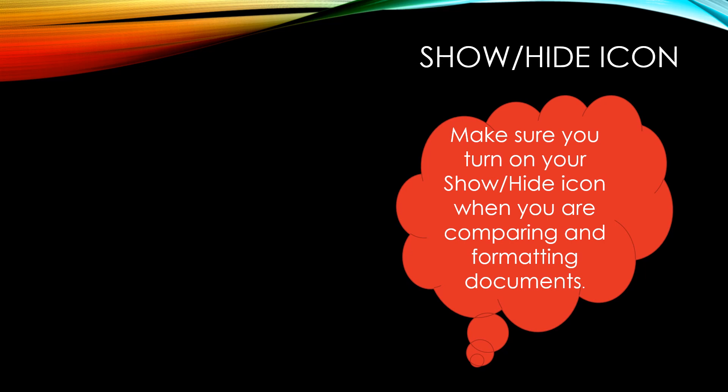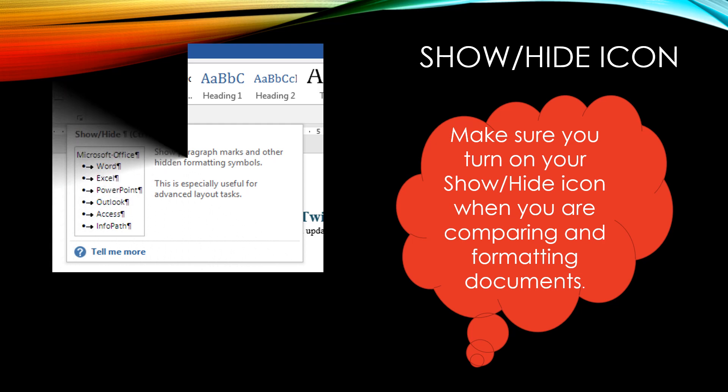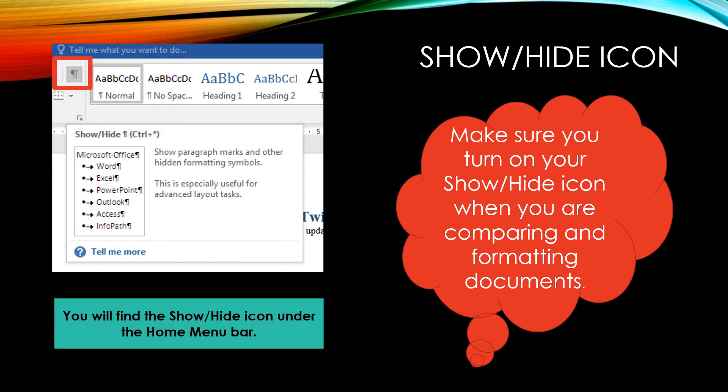Show hide icon. Make sure you turn on your show hide icon when you are comparing and formatting documents. The show hide icon keeps hidden the formatting symbols such as the paragraph marks and the spacing between text. When you are trying to format layouts, you will need to see the formatting marks. So you need to make sure that the show hide, or what we call that little backwards P, is turned on so that the paragraph markers and the spacing between all of the words is displayed.